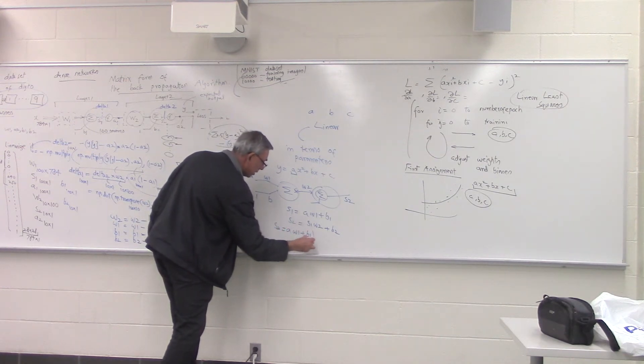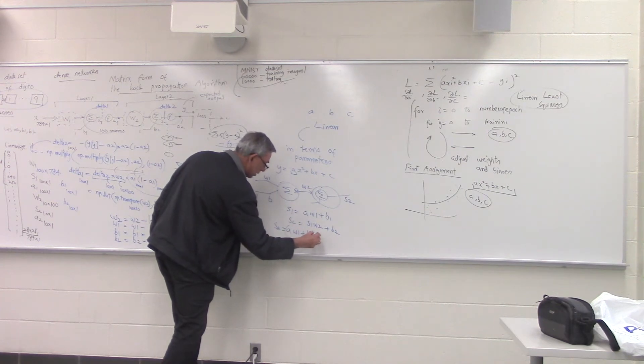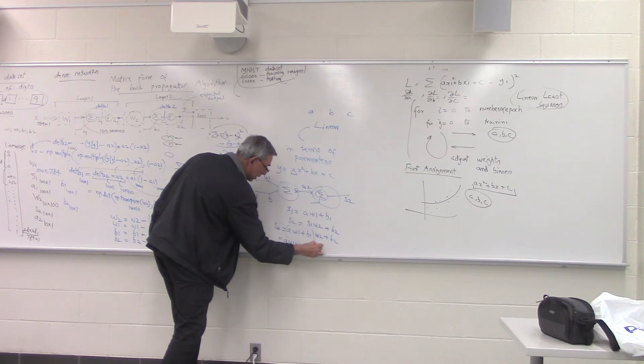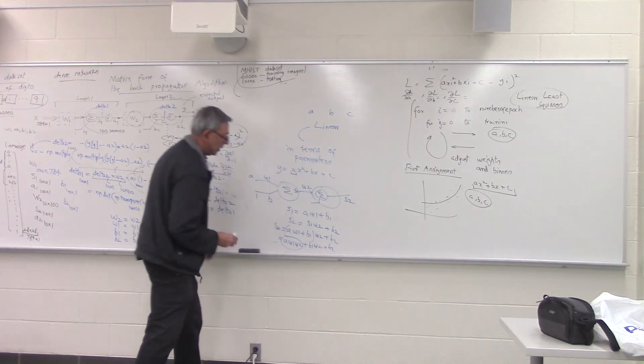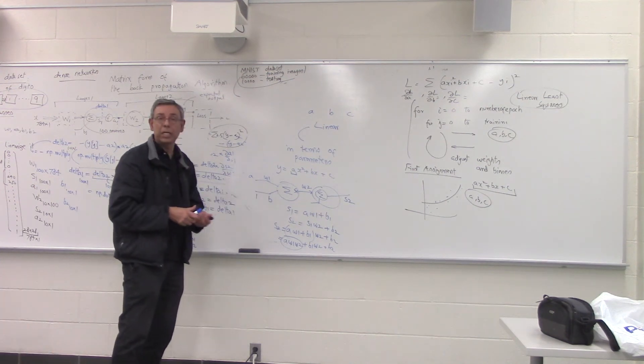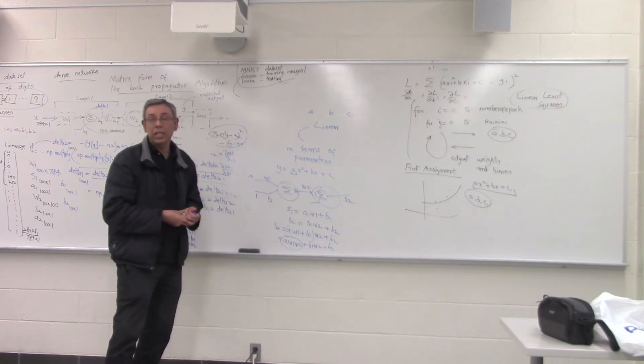So this becomes a second order equation. This becomes W2 times (AW1 plus B1) plus B2. So is this still linear in terms of our parameters? The model parameters are W1 and W2. So it's no longer linear.